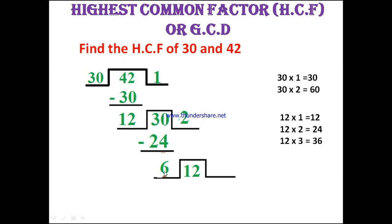Now the second divisor 12 becomes the dividend. In 12, how many times does 6 go? Two times — 2 times 6 is 12. We subtract and get remainder 0. We keep proceeding like this — the divisor becomes the new dividend — until we get remainder 0.